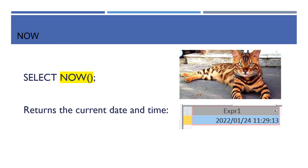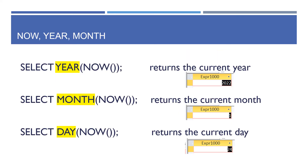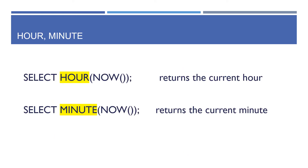The NOW() function — SELECT NOW() gives you today's current date and time. SELECT YEAR(NOW()) gives the current year, SELECT MONTH(NOW()) gives the current month, SELECT DAY(NOW()) gives the current day. You can also return the current hour and the current minute.